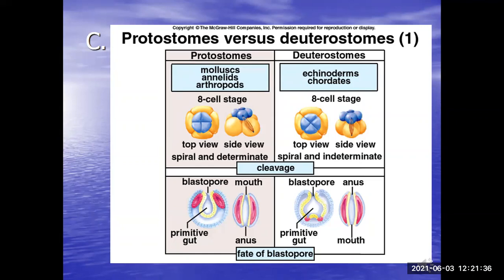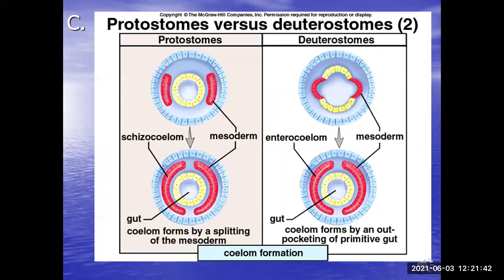Here's another diagram showing how the formation of the coelom differs. In protostomes, the mesoderm splits — called schizocoelous development, like schizophrenic means split personality. In deuterostomes, the mesoderm forms as an outpouching of the gut, called enterocoelous development. You don't need to know those two terms, but understand that the formation of the coelom is different, and that more advanced animals are deuterostomes. Today we're going to look at two protostomes and two deuterostome groups.